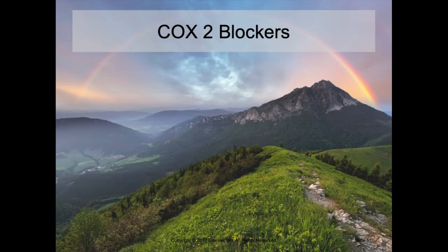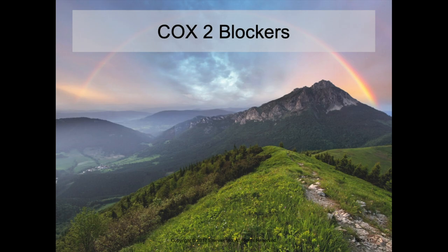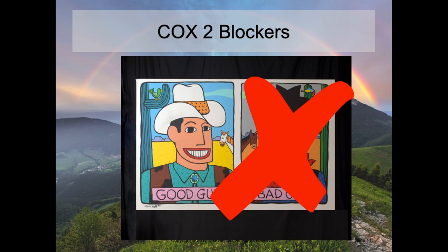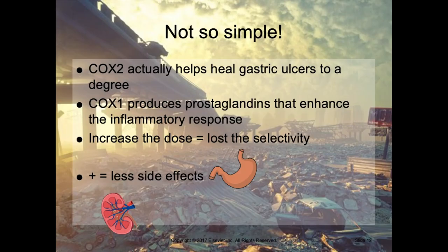The thought was that NSAIDs that selectively inhibit COX-2 without significantly inhibiting COX-1 would decrease inflammation without reducing the protective features from normal healthy prostaglandins that support the stomach and kidneys. This has been the advantage cited by manufacturers of newer NSAIDs since the 1990s. The goal of many newer NSAIDs is to strictly block COX-2 — getting rid of the bad guy and leaving COX-1 alone.